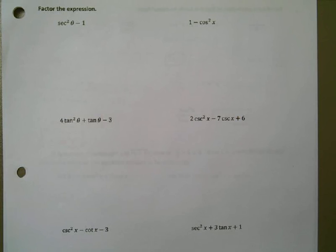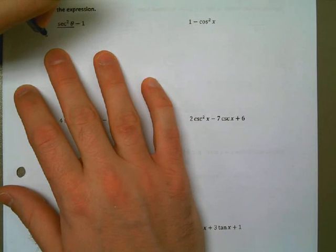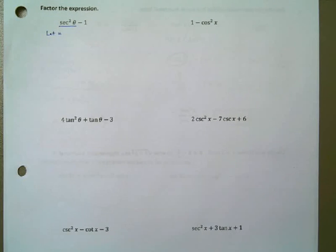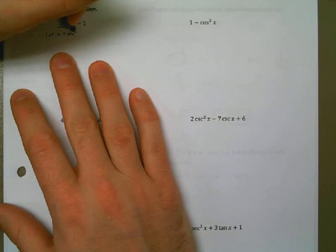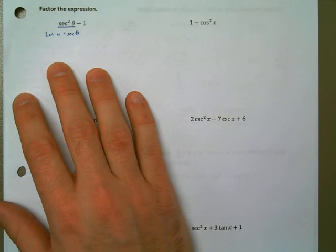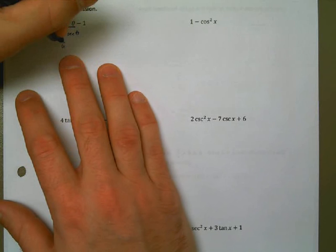The first step I'm going to show you is replacing secant squared with the letter U — this is called U substitution in calculus. The point is that we're going to replace secant theta with U. So instead of secant squared, we now have U squared minus 1. We can see that's a difference of squares. A lot of students see U squared minus 1 easier than secant squared minus 1, but we treat them the same. That factors out as U plus 1, U minus 1. Now I replace U with secant theta, giving secant theta plus 1, secant theta minus 1 — completely factored because everything is to the first power.